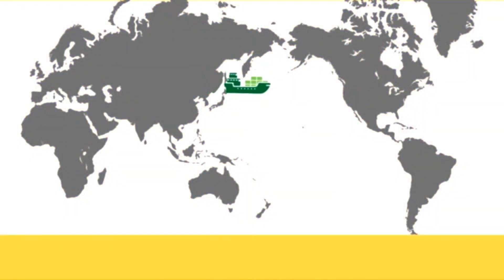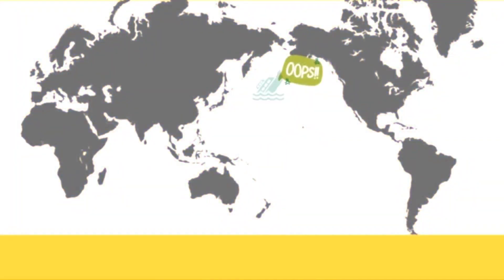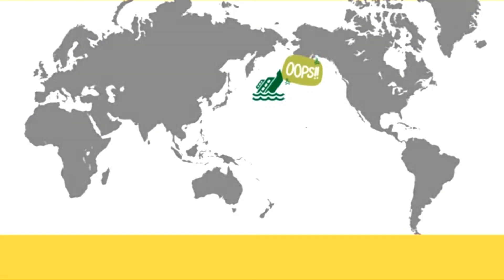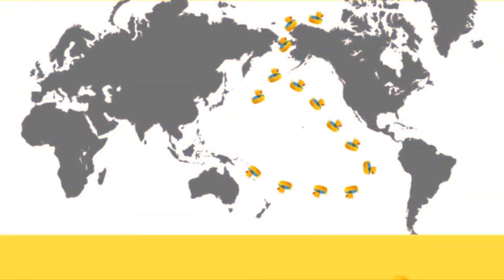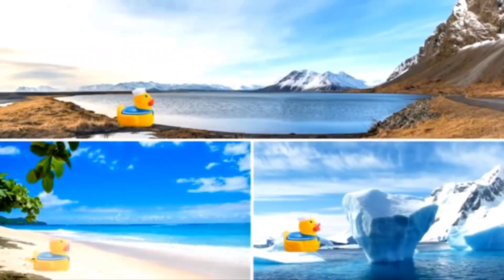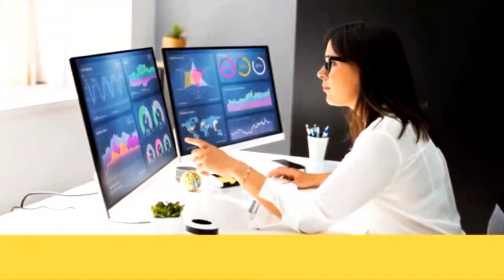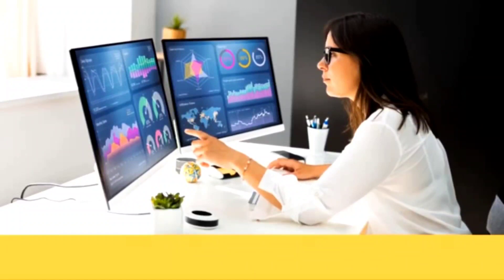In 1992, there was a bad storm, and a container fell off a cargo ship and landed in the Pacific Ocean. Inside the container were thousands of rubber duckies. Currents washed them onto beaches, islands, and Arctic ice. Scientists are still using rubber ducky data they collected to study currents today.